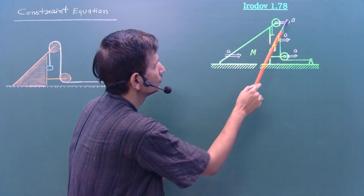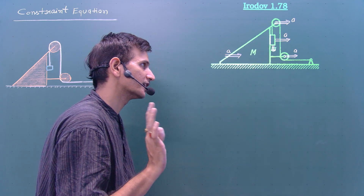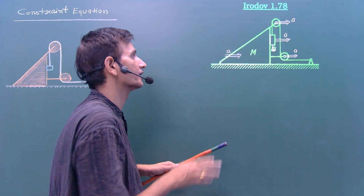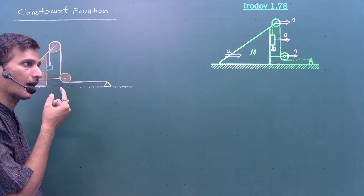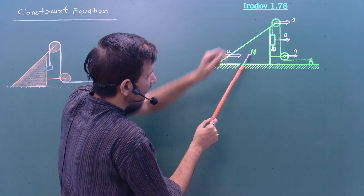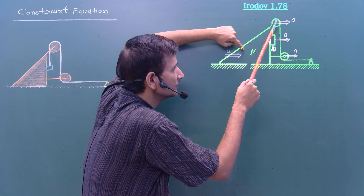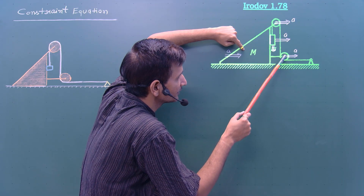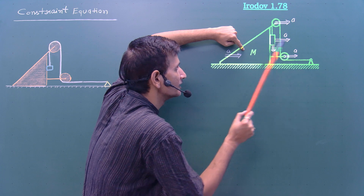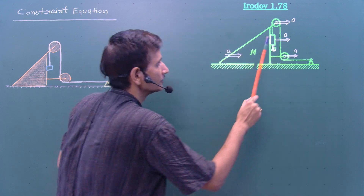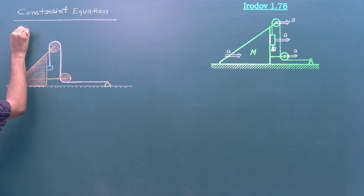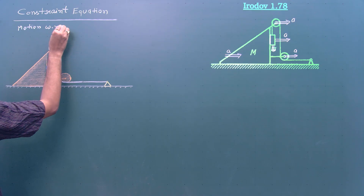We have five objects moving, so we would need five equations — very difficult to solve. So I apply a trick: if I maintain this wedge at rest, then this pulley is at rest, this pulley is at rest. The block can then move only in the y direction, and only two objects move — this block and this fixed part. So I calculate the motion with respect to the wedge.